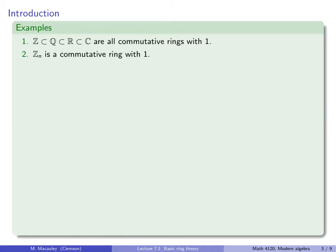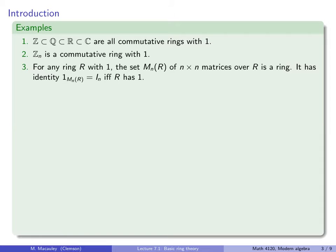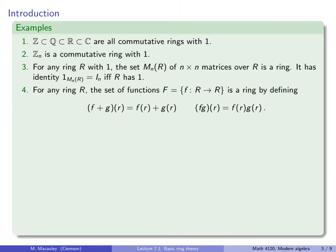Third, for any ring R with one, the set M_n(R) — the n×n matrices with entries from R — is a ring with identity element I_n, the n×n identity matrix, if and only if the original ring R has one. Fourth, for any ring R, the set of functions from R to itself is a ring, where (f+g)(r) = f(r)+g(r) and (fg)(r) = f(r)·g(r).